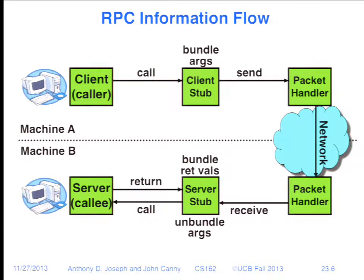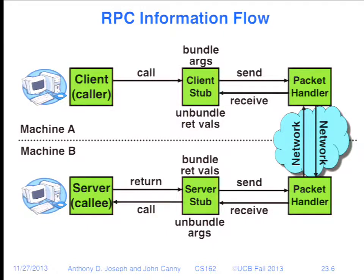Then everything rolls backwards. The server returns arguments in its native language, those get serialized into a string sent to the server packet handler, which packs them up in a network packet and sends them back. Those get forwarded to the client stub code, which deserializes and produces objects in the client's address space, and then executes a return. This really just looks like a regular function call to the client.